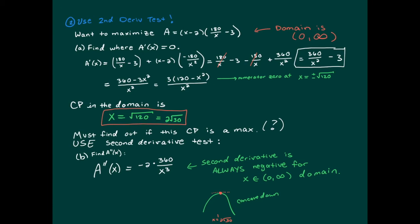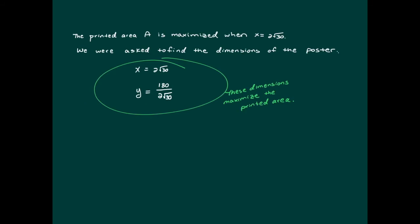We were trying to maximize the printed area, and we've confirmed this is indeed a maximum. At the end of the problem, check whether you actually answered the question asked. The question asked for the poster dimensions, not just x. Since y equals 180 divided by x, substitute x equals 2 square root of 30 to find y. The final answer is both dimensions — x and y — giving the poster dimensions that maximize the printed area.